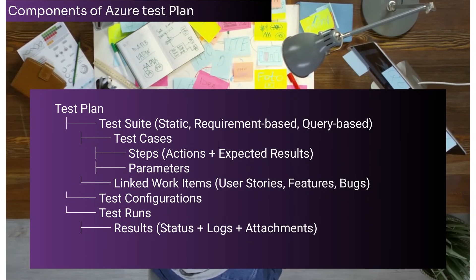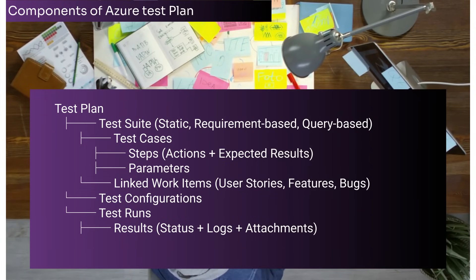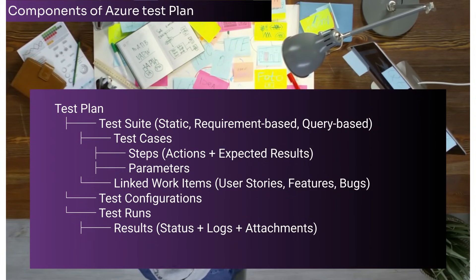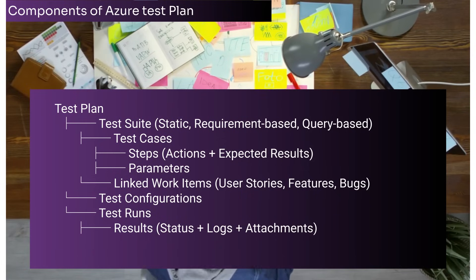For Test Configurations, these specify environments for executing tests, such as OS, browser, device type, etc. Finally, Test Runs and Results: Test Runs are execution instances of a test suite or individual test cases. Attributes of test runs include test plan, test suite, test cases, and status — for example not run, passed, failed, or blocked — with results and attachments like logs and screenshots.